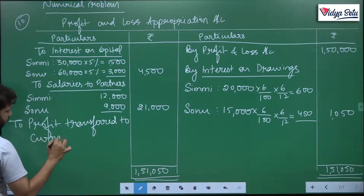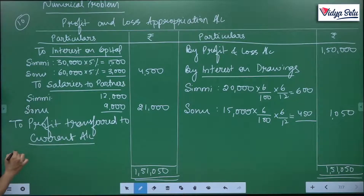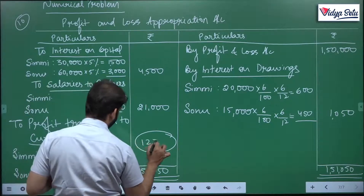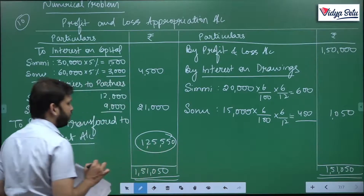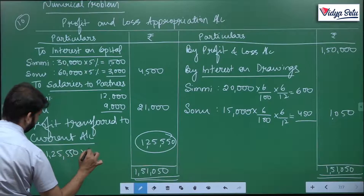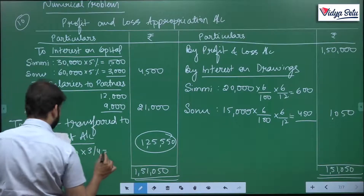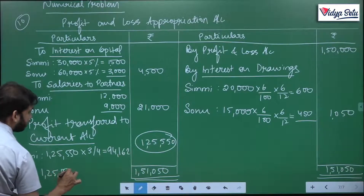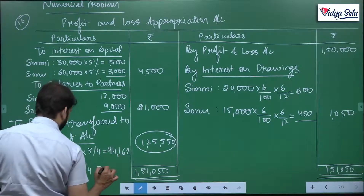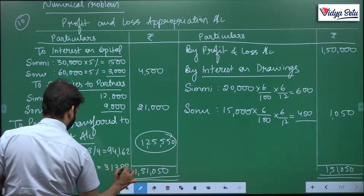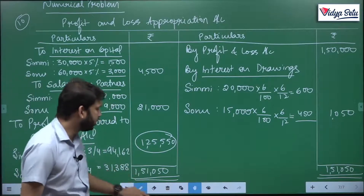The profit transfer — remember to current accounts, not capital. So for Simi and Sonu, the balance and total net profit available for distribution comes to 1,25,550. The ratio is 3 to 1, so Simi's share is 94,162 and Sonu's share is 1,25,550 into 1 by 4, which comes to 31,388. This is the profit which we are going to transfer to the current accounts.